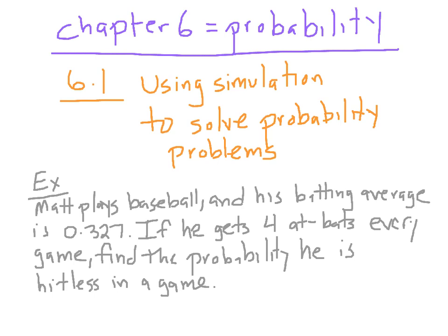Here's a good example of a simulation problem. Matt plays baseball. His batting average is .327, which means he gets a hit 32.7% of the time. Every game he gets four at bats, and we want to find the probability that he is hitless in a game. That's an example of a problem that would be relatively difficult using conventional equations, so we'll just use simulation.